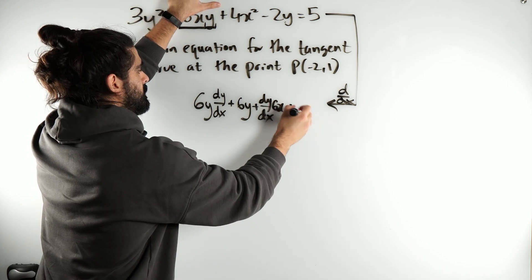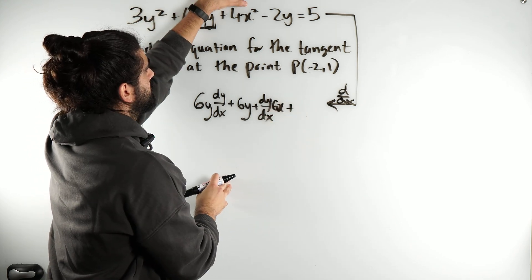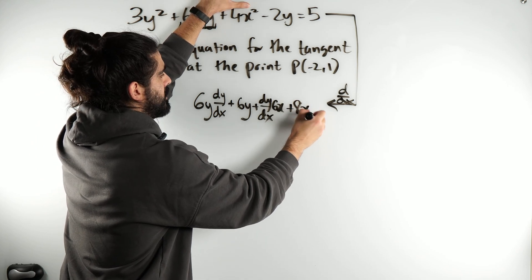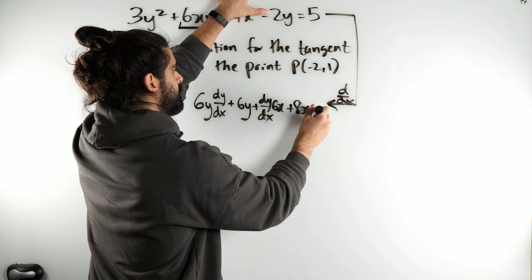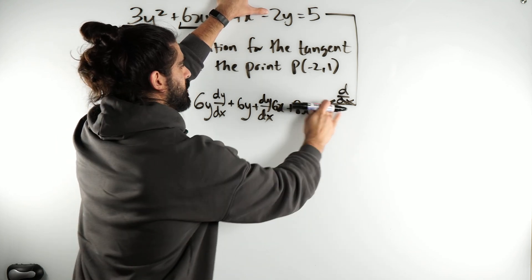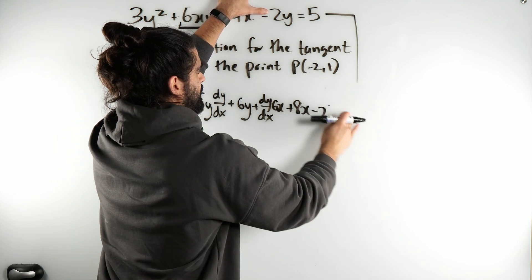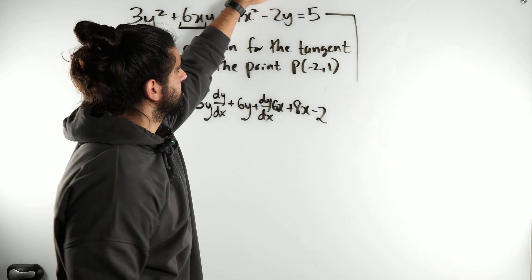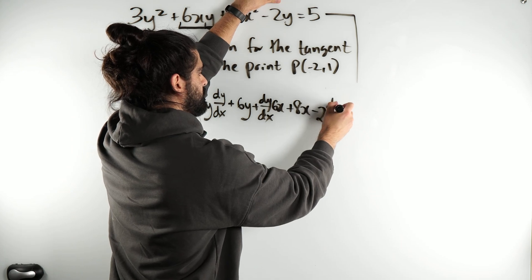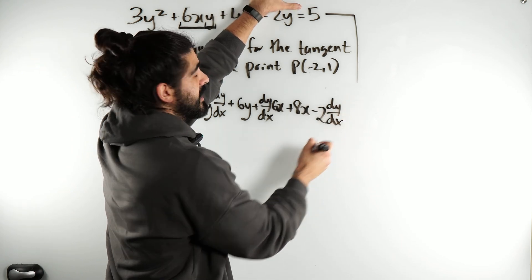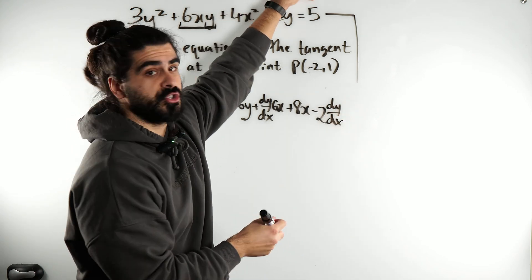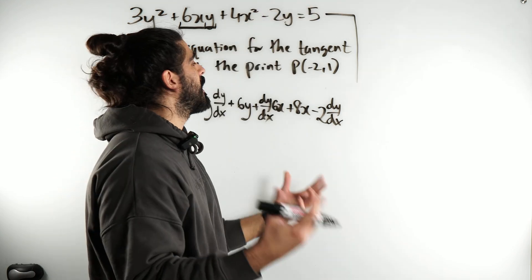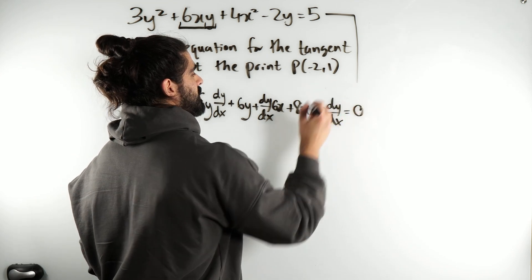Plus, you could use a bracket here, bring down the 2, 8, knock one off the power, x. Minus 2, I'm rubbing all over myself here. Differentiate minus 2y, the y just goes, times by dy dx. Now here's an interesting one. What a lot of students do when I'm marking papers is they just leave it as 5. They forget that 5 is a constant and when you differentiate that, it becomes 0.